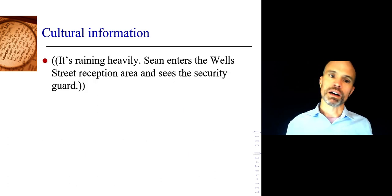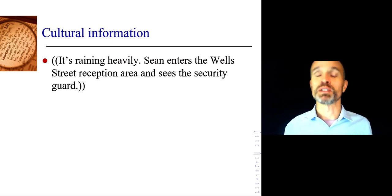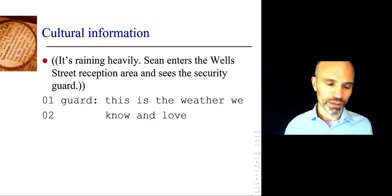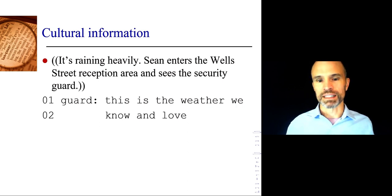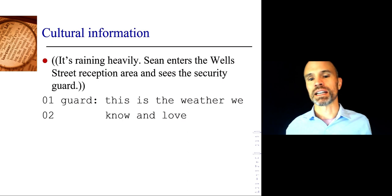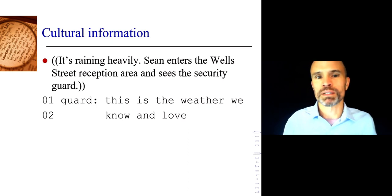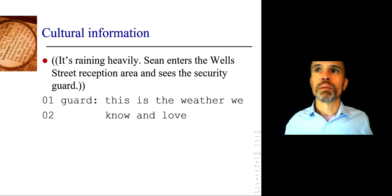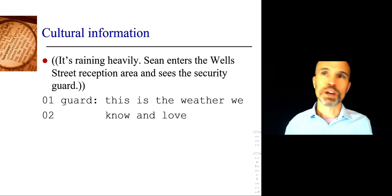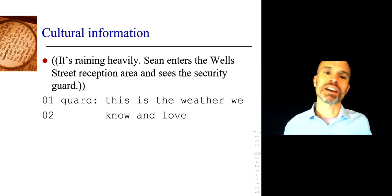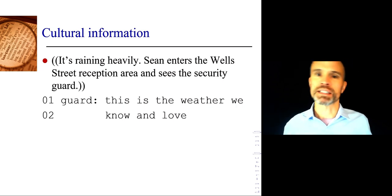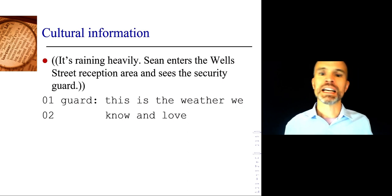At the Wells Street building, I see the security guard while it's pouring rain and she says 'this is the weather we know and love' — clearly being sarcastic. Most people don't enjoy being rained on, especially commuting into central London. So I understand immediately she's making a little joke rather than a literal statement about loving rain.